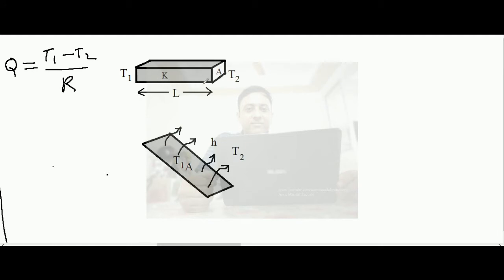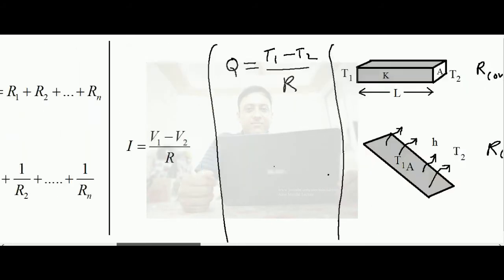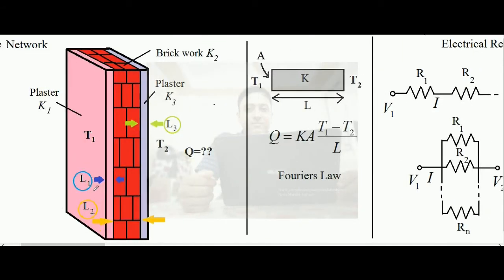Before calculating, let us recall the thermal resistance formulas. For a solid conductor of uniform cross-sectional area with thermal conductivity k and length l, the thermal resistance due to conduction is R_conduction = l / (k·A). For convection from a hot surface to surrounding air, the thermal resistance is R_convection = 1 / (h·A), where h is the convective heat transfer coefficient.